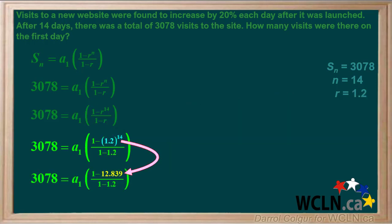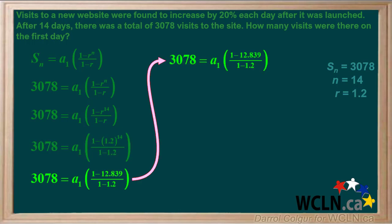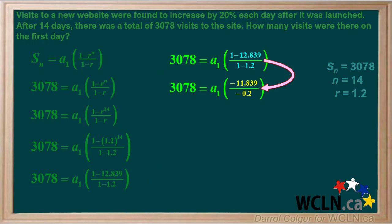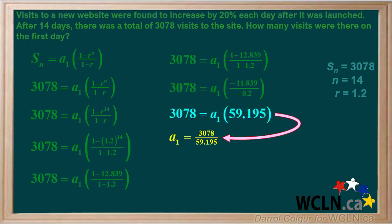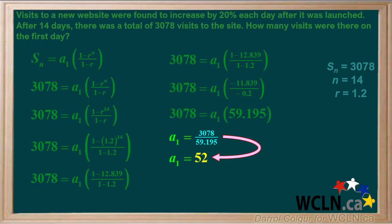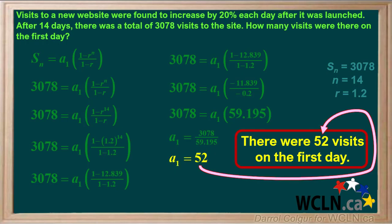1.2 to the power of 14 is approximately 12.839. 1 minus 12.839 is negative 11.839, and 1 minus 1.2 is negative 0.2. Negative 11.839 over negative 0.2 is approximately 59.195. Solving for a1 gives us a1 equals 3078 over 59.195, which is 52 when rounded to the nearest whole number. So we can state that there were 52 visits on the first day the site was launched.